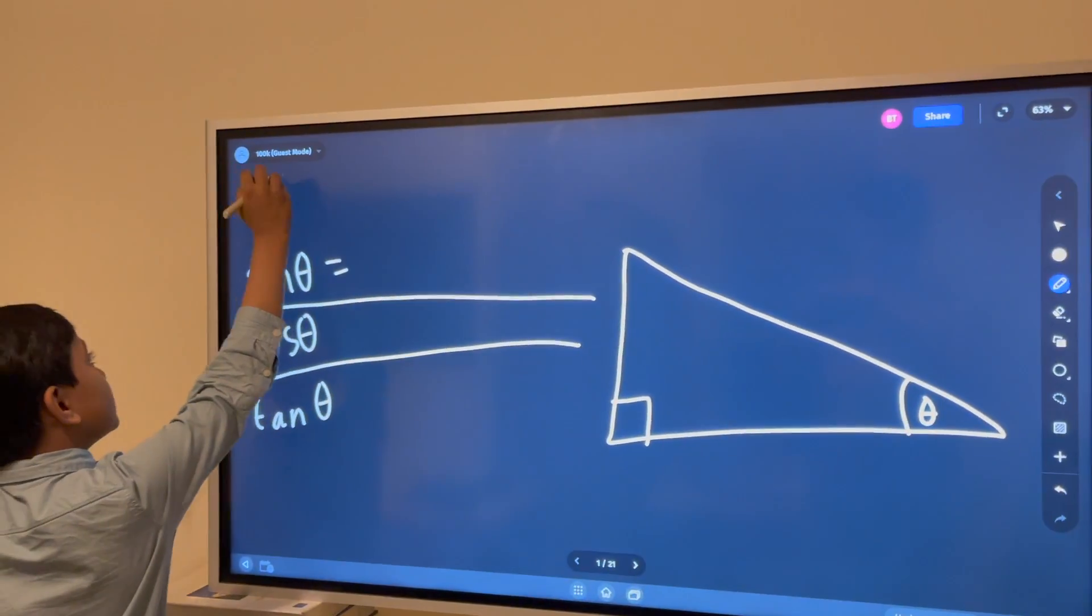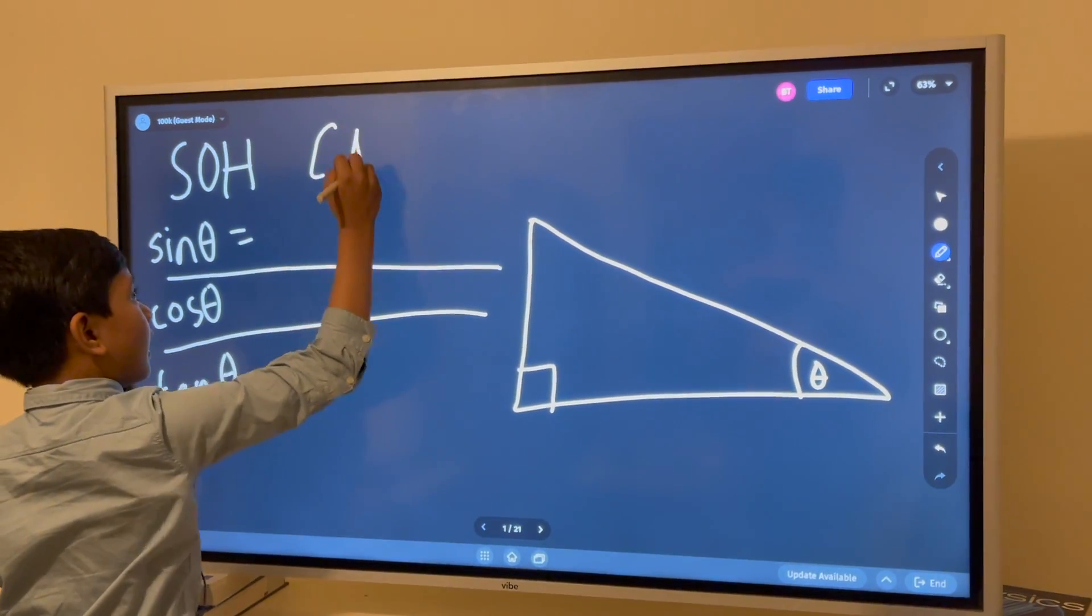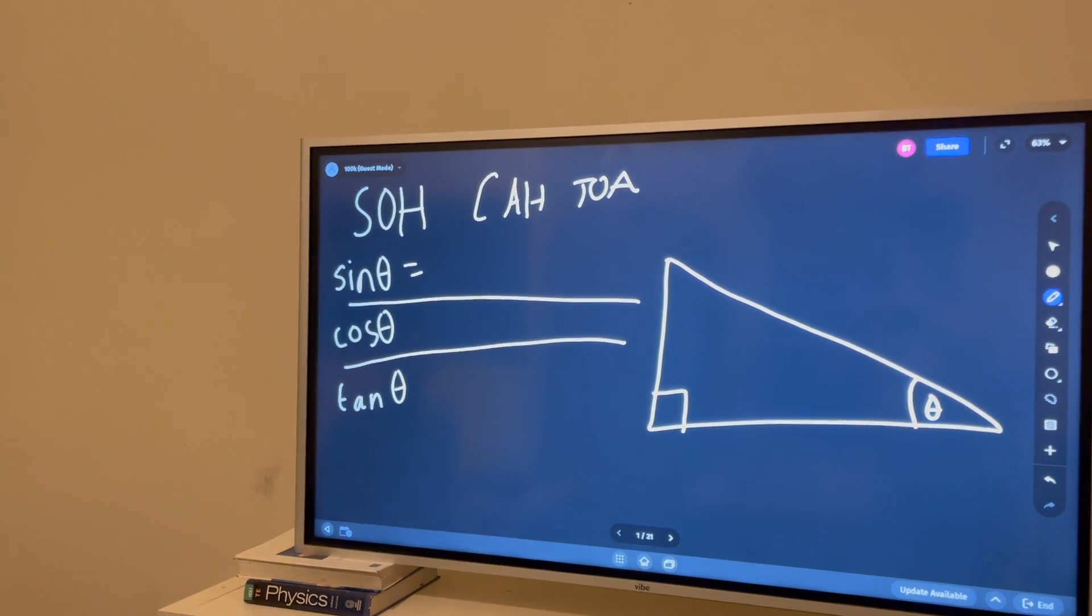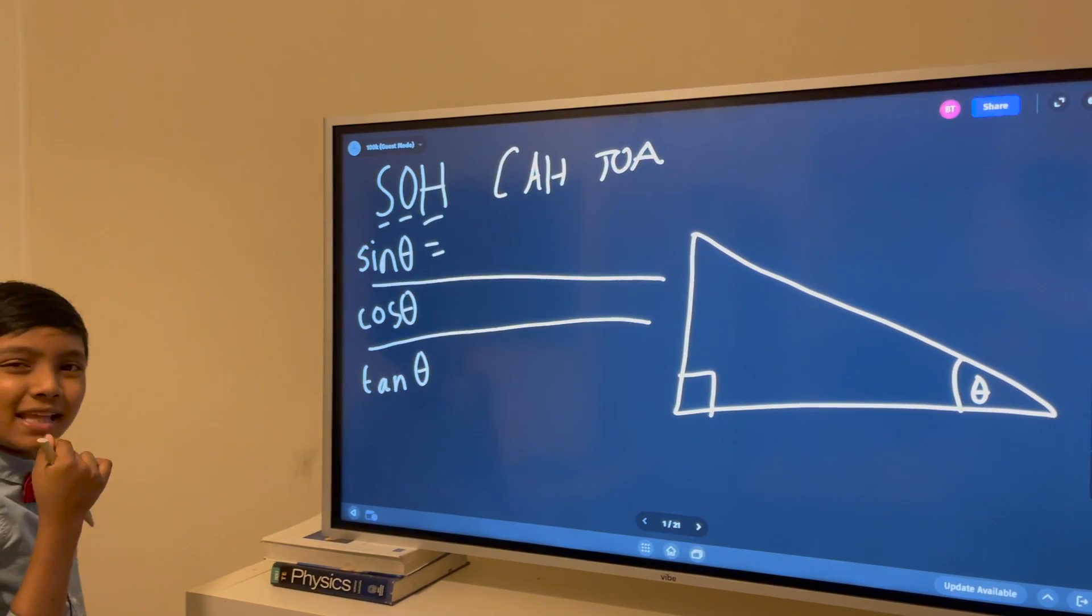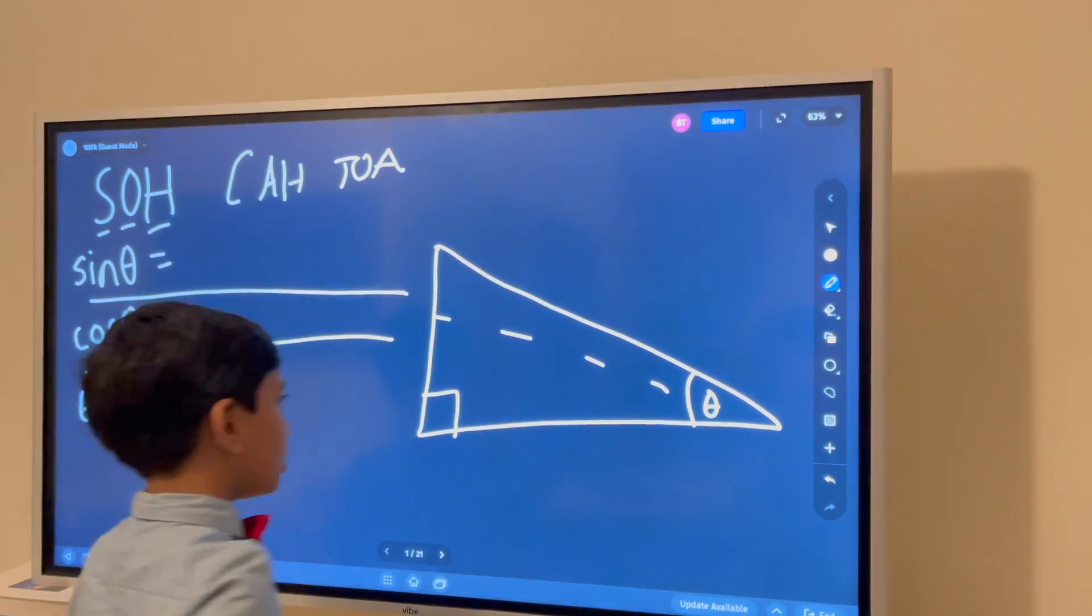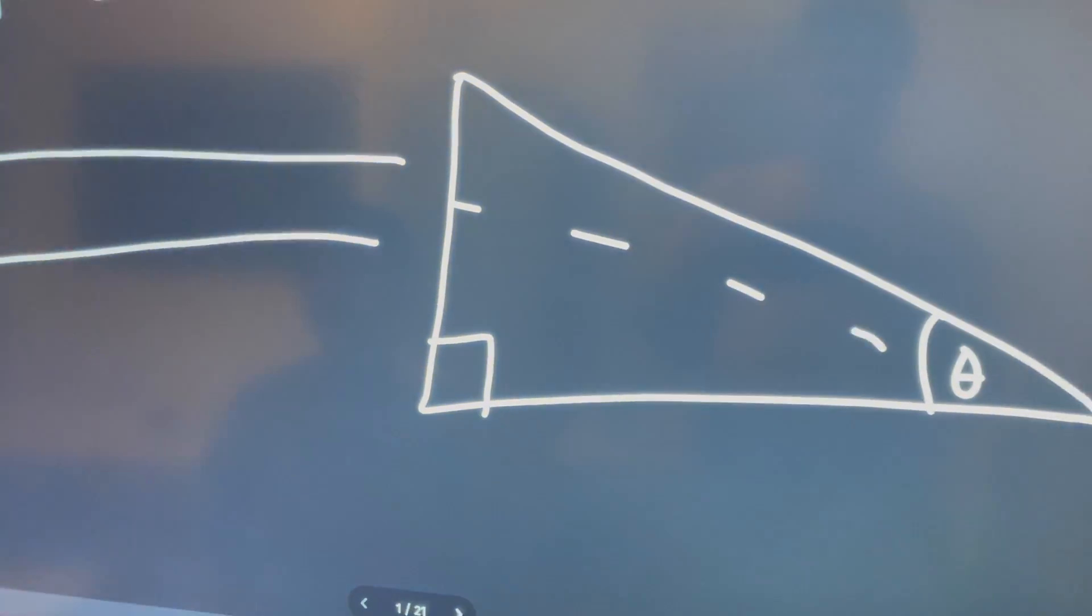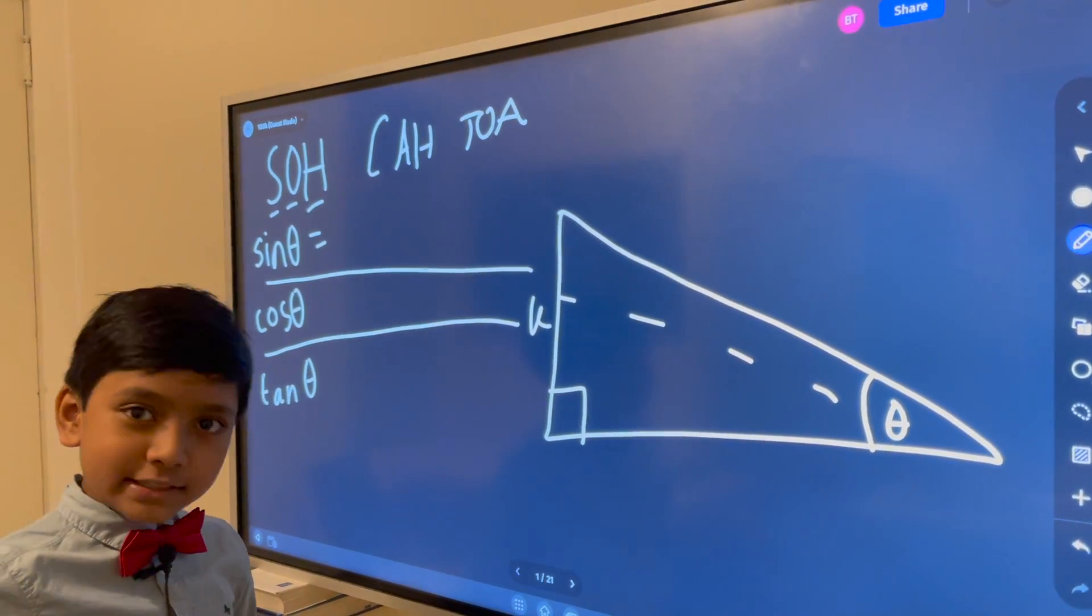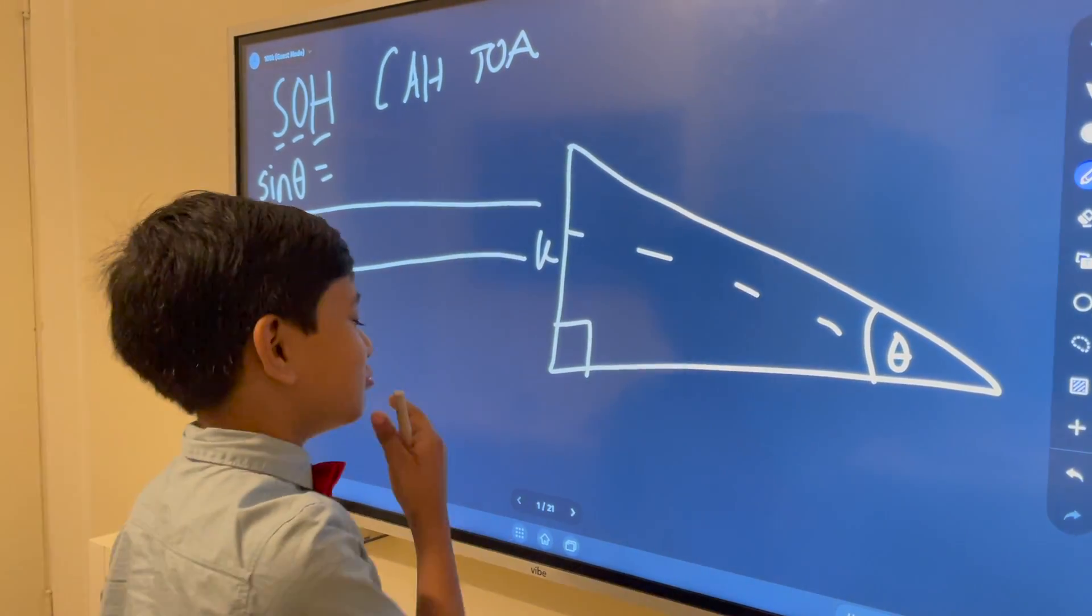So, a common phrase that's used to remember these equations: SOH-CAH-TOA. SOH stands for sine, which is opposite over hypotenuse. What does that mean, you may ask? Well, it means the angle opposite to theta right over here and the longest side. So, this side will be A, which is a very original, very creative name. Now, let's come up with an even more original name. B.